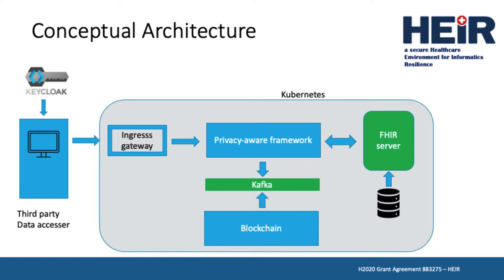In the use case, a third-party data requester, shown on the left, authenticates to the hospital system and is returned a JSON web token, or JWT. This JWT will be automatically attached to every request the user makes. The Privacy Aware framework securely locks down access to the hospital's FHIR server. All access must go through an ingress gateway, which first checks the validity of the JWT and then redirects the request to the Privacy Aware framework.